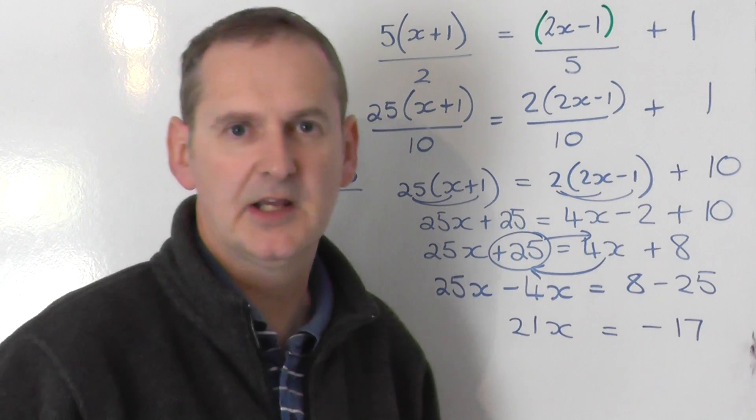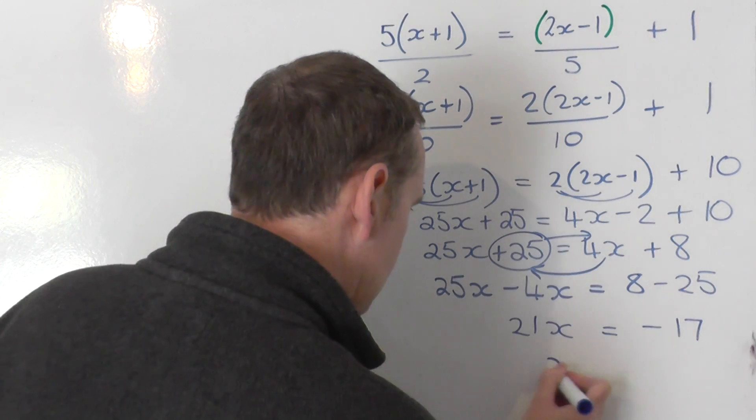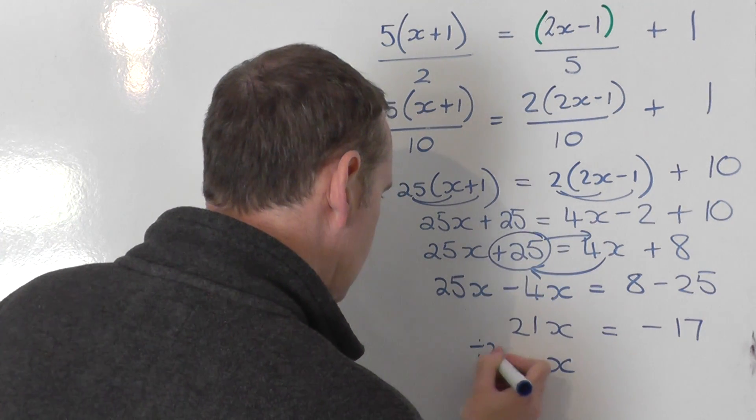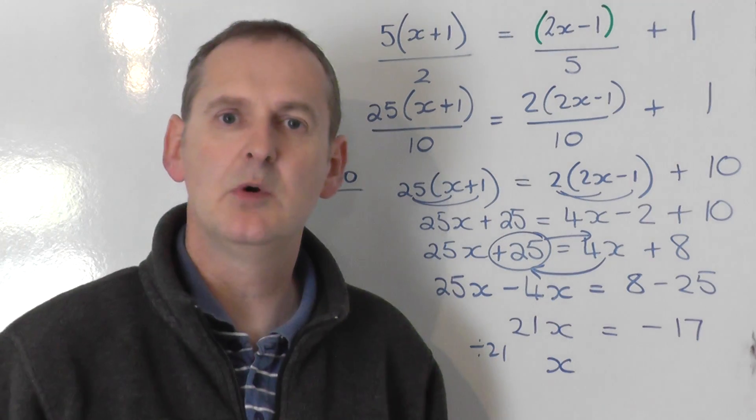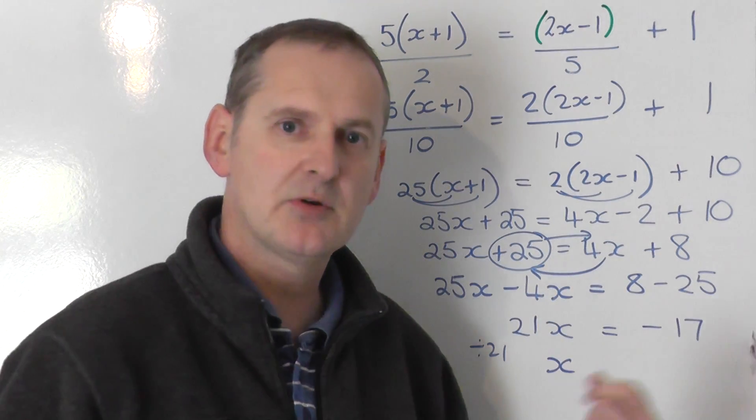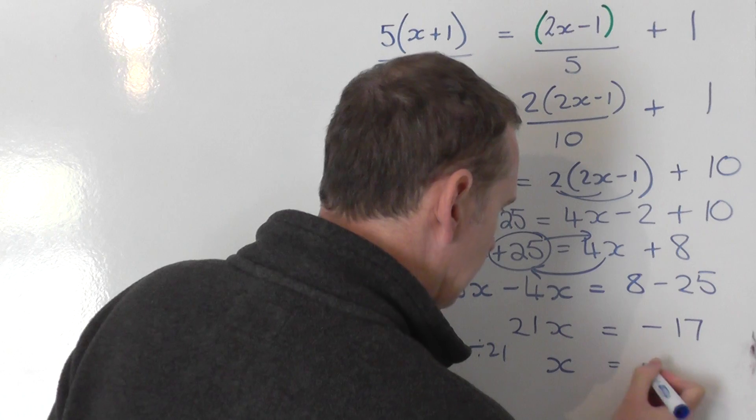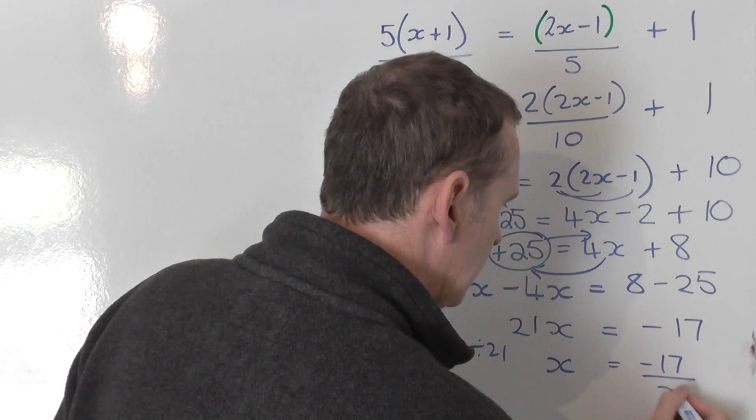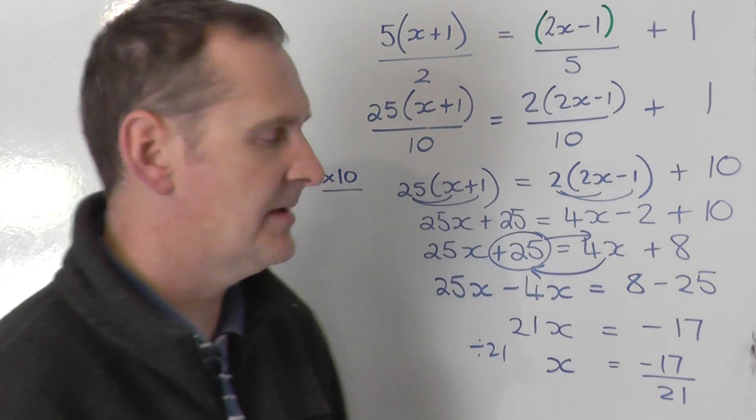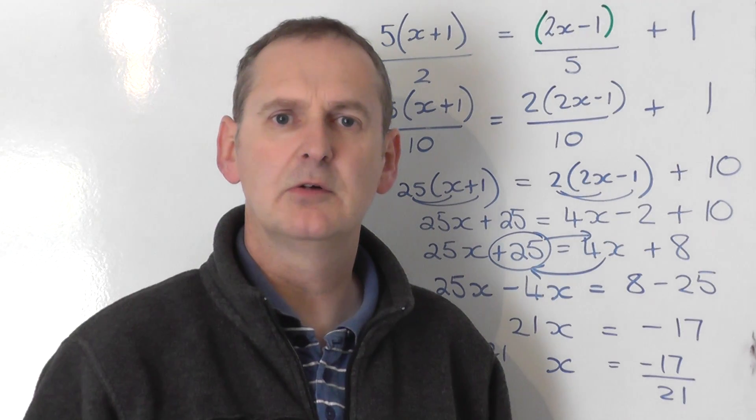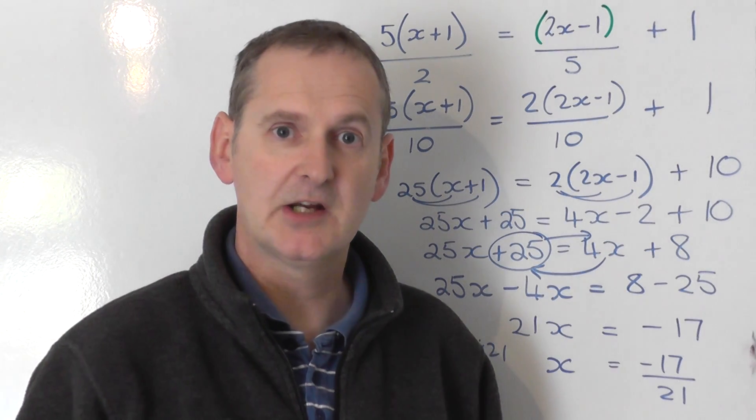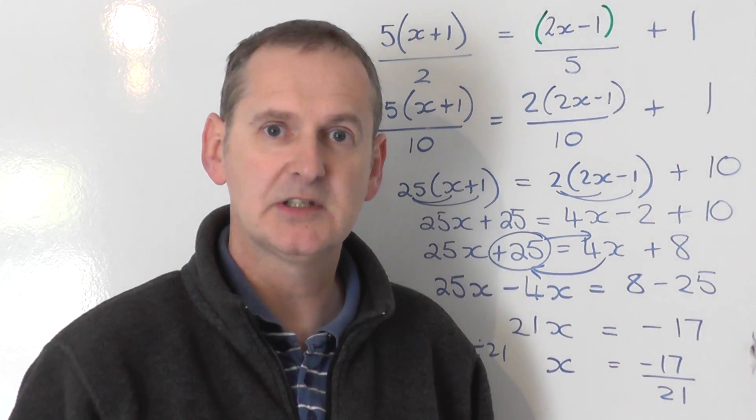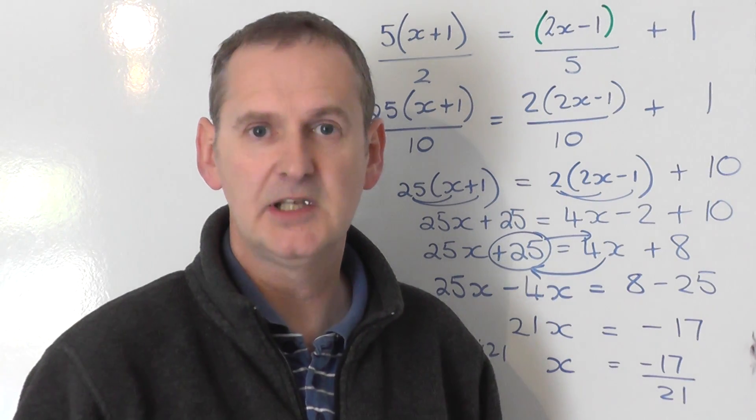However, I don't want 21x, I want x. So to go from 21x to get a single x, you simply share the left by 21. So you share the left by 21, you also share the right by 21. So you get minus 17, and you've got to share that by 21. That's a really awkward decimal, so I leave it as a fraction. The answer is x equals minus 17 over 21. That's the end of this video.